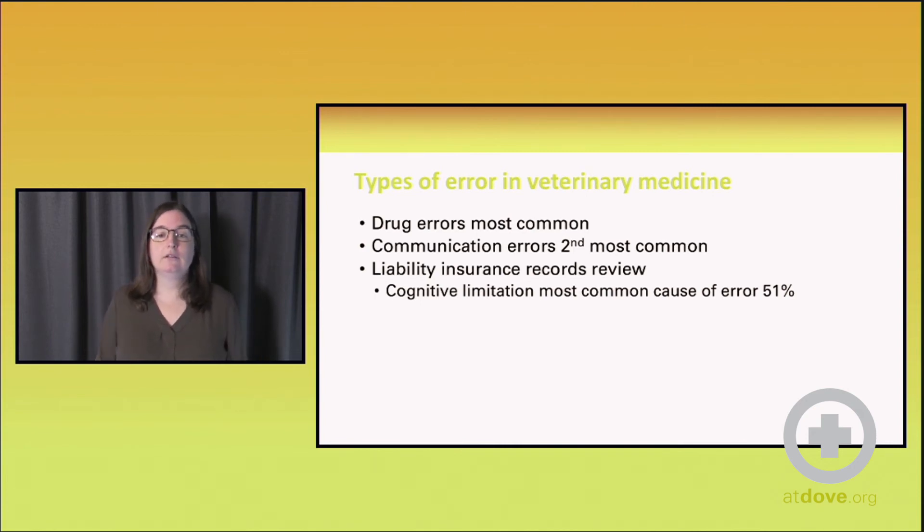Another way to look at the type of medical errors is actually in looking at liability claims. These are going to be our most severe errors that definitely resulted in harm to a patient, enough so to prompt a liability claim. Oxtoby et al. did an insurance records review and found that of the errors that met that high standard of starting a liability claim, 51% of those errors were cognitive limitations.